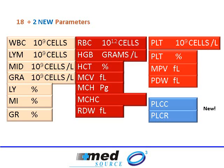Both machines measure 18 standard parameters, which include WBC, lymphocytes, monocytes, granulocytes and their percentages, red blood cells, hemoglobin, hematocrit, MCV, MCH, MCHC, RDW, platelets — both in percentage and total count — mean platelet volume (MPV), and platelet distribution width. These are the 18 parameters. Additionally, both cell counters have two very interesting parameters called PLCC and PLCR.